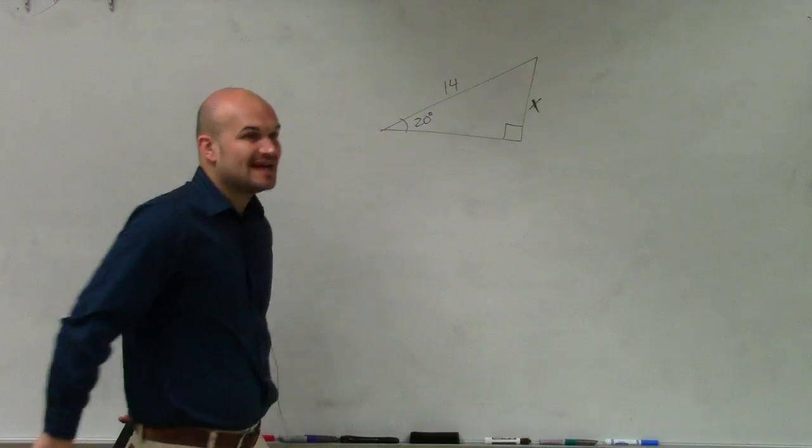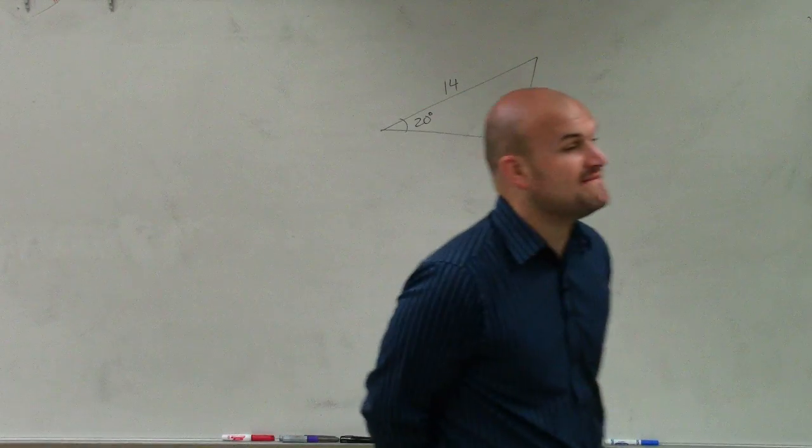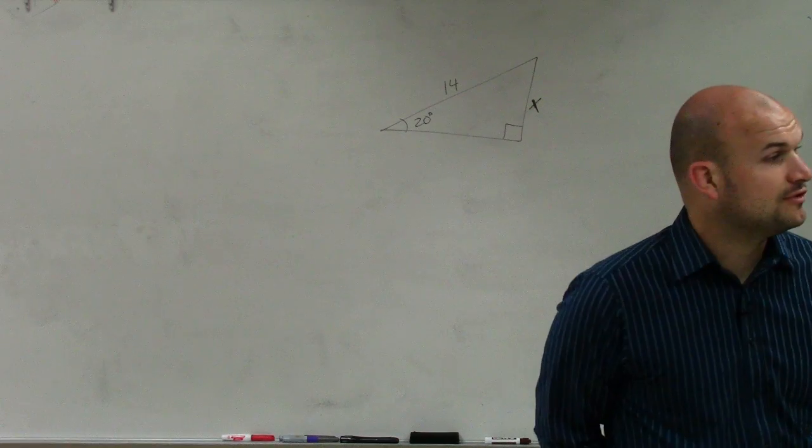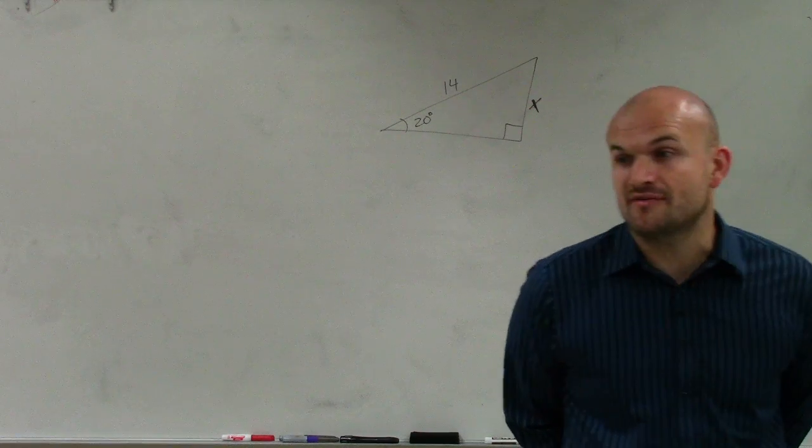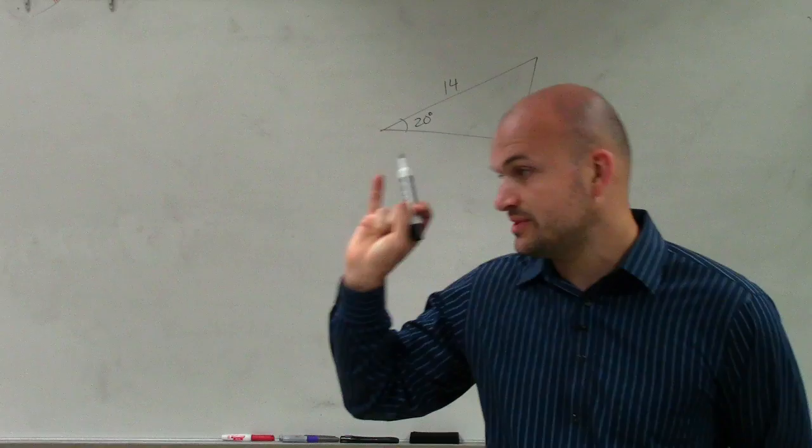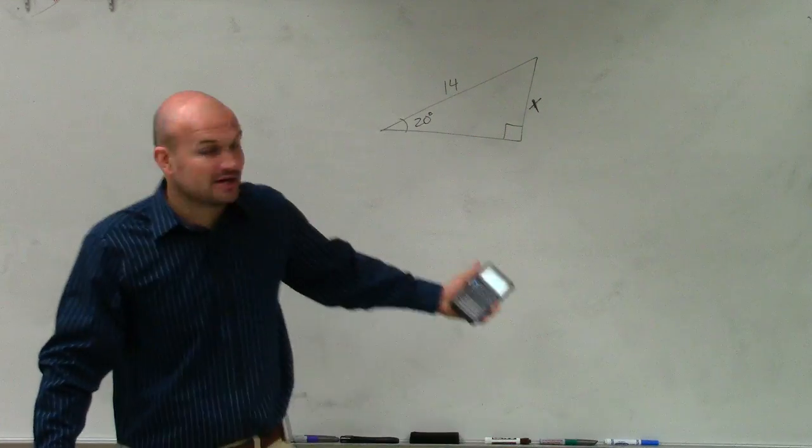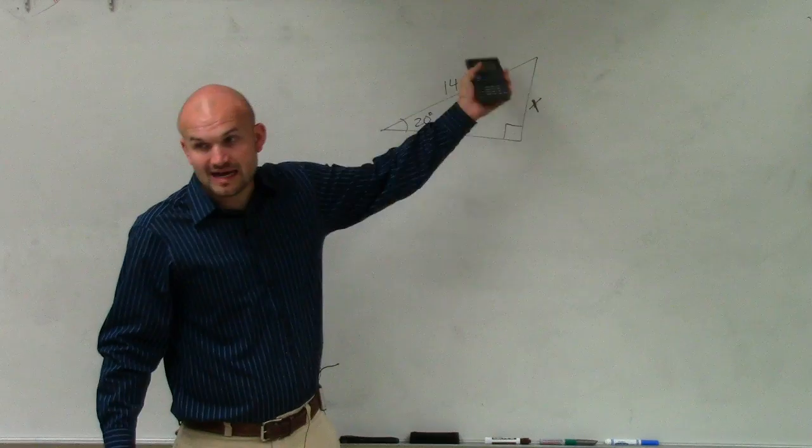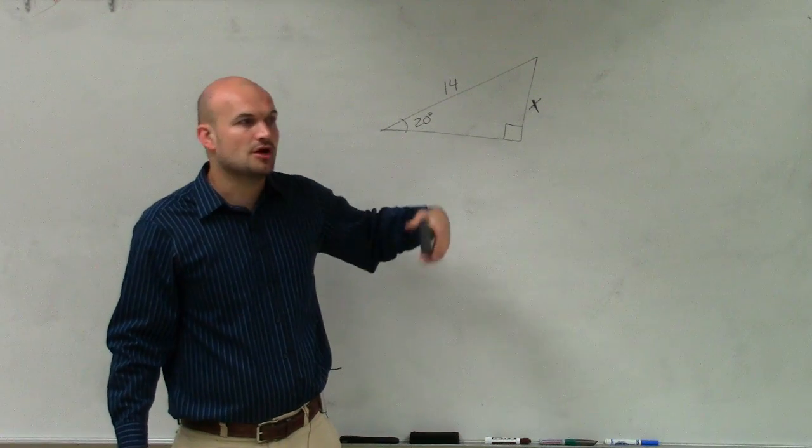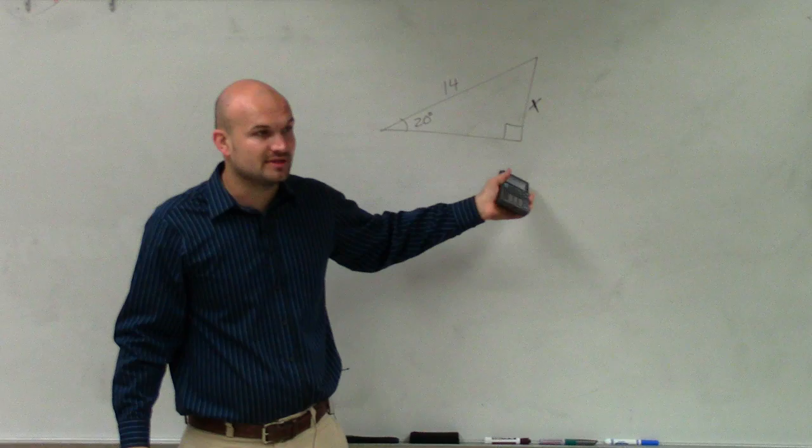Now let's say we're trying to find x. We have an issue here because we've learned two ways to find the side lengths of a right triangle. The first one was Pythagorean theorem. This is a right triangle, but the problem with Pythagorean theorem is we need to know the other two side lengths. So we can't apply Pythagorean theorem in this case.